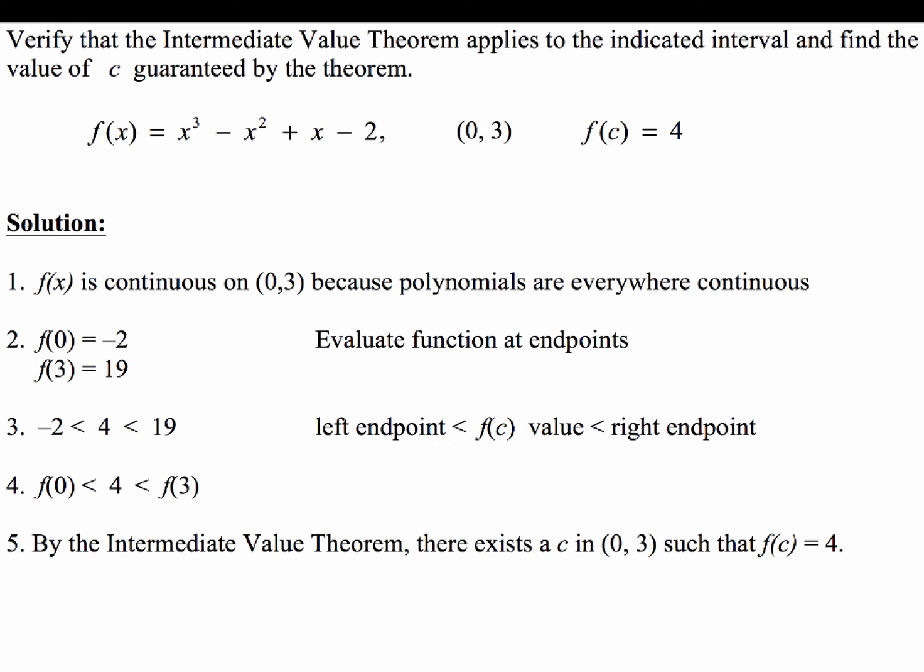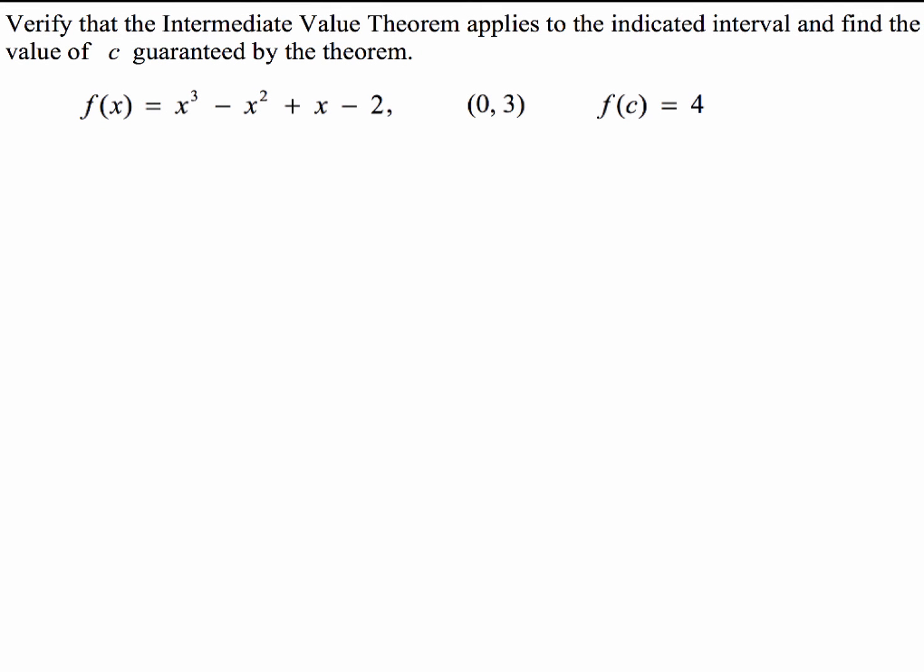Now the next thing we're going to do is actually find that x value that gives us an answer of 4 when we plug it into our function. So to do that, first we're going to take our function f(x) and set that equal to 4, because that's the y value that we want. The next thing we're going to do is move the 4 over, so when you subtract 4 on both sides, you'll get x³ - x² + x - 6 = 0. Now in order to solve this, there's a lot of different techniques you can use, but we're going to use synthetic division because that's going to get us to our answer the most quickly.